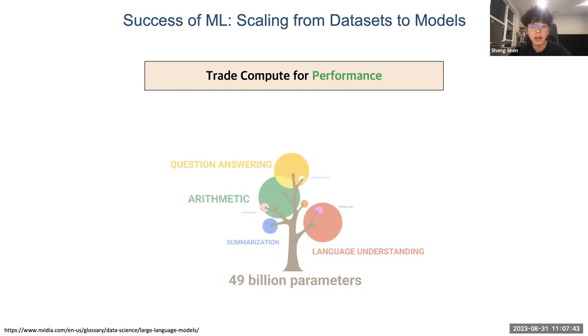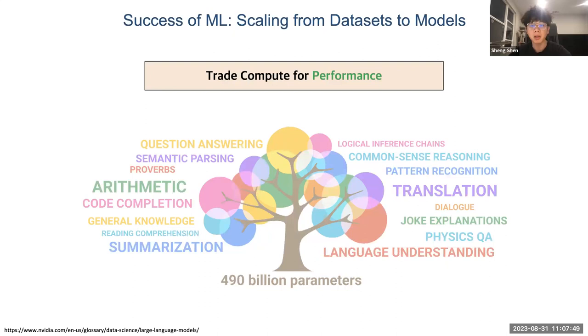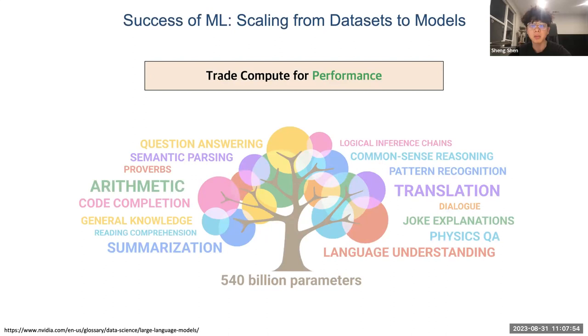As illustrated here, for larger models you can develop some emergent abilities, such as code completion and semantic processing, which cannot be found in small models.